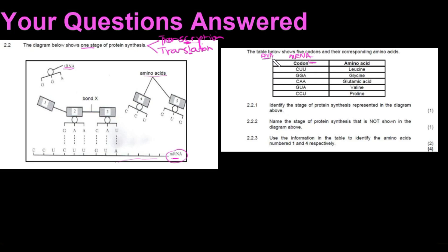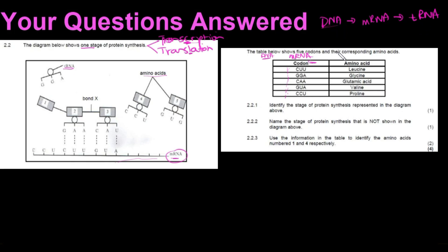They can give you the anticodon, or they can give you the DNA sequence and you'd have to work it to the codon and then to the anticodon. Remember, we always start with the DNA strand. The DNA strand is copied by the mRNA strand, which is then copied by the tRNA that brings in a specific amino acid to build a specific protein based on that original message from the DNA.